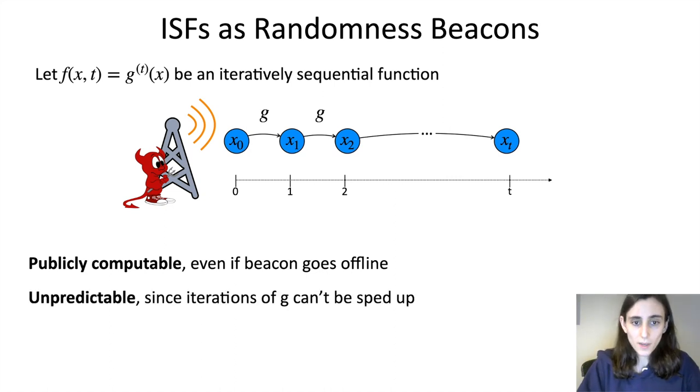In addition, it's unpredictable, which is what we wanted from a randomness beacon, because iterations of g can't be sped up. So if you could predict the value of a beacon maybe sufficiently far in the future, that would give you a way to speed up iterations of g, essentially.